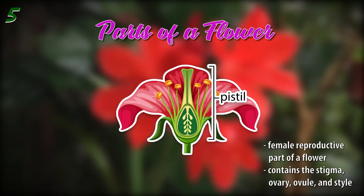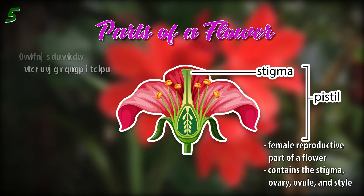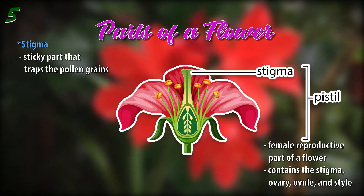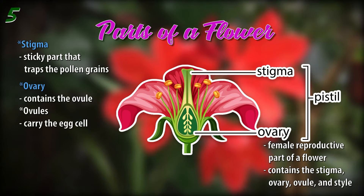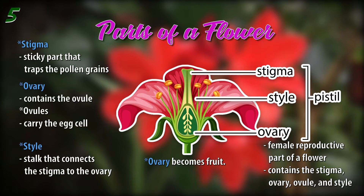The pistil is the female reproductive part of a flower. It contains the stigma, the sticky part that traps the pollen grains; the ovary, which contains the ovule that carries the egg cell; and the style, a stalk that connects the stigma to the ovary. The ovary later becomes the fruit, while the ovule becomes the seed.